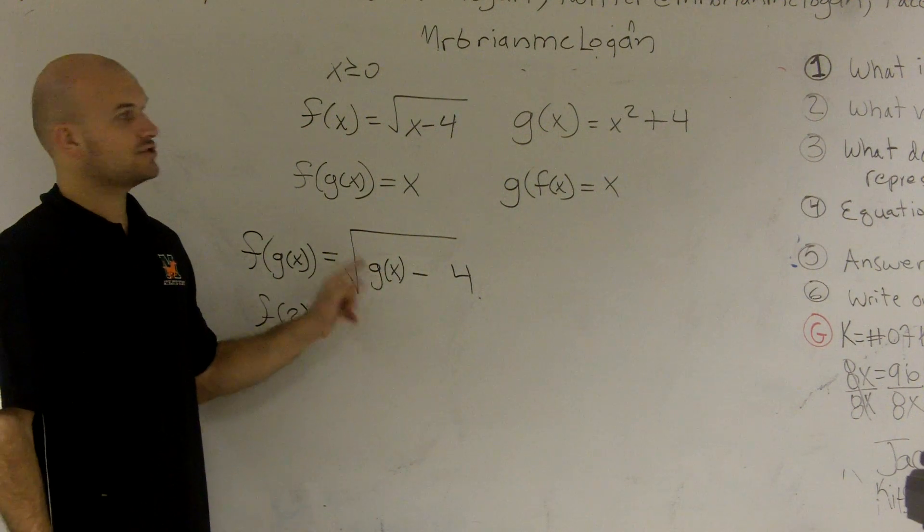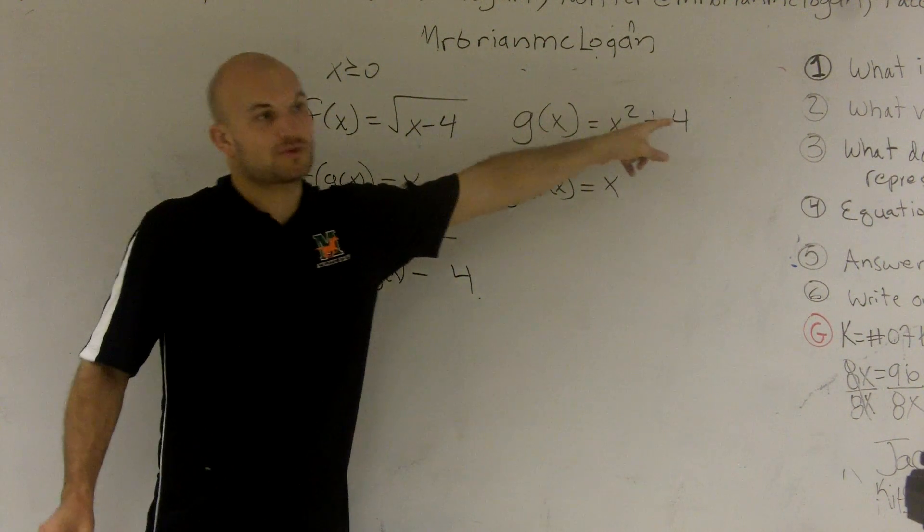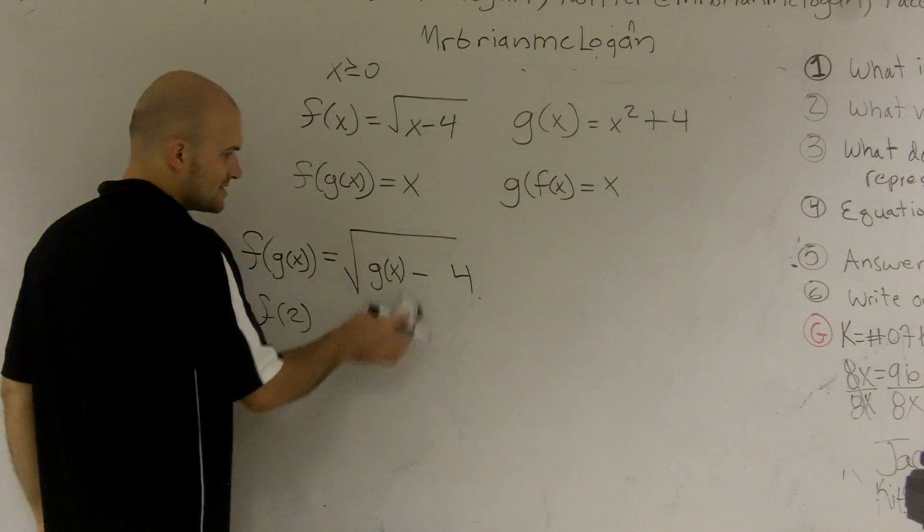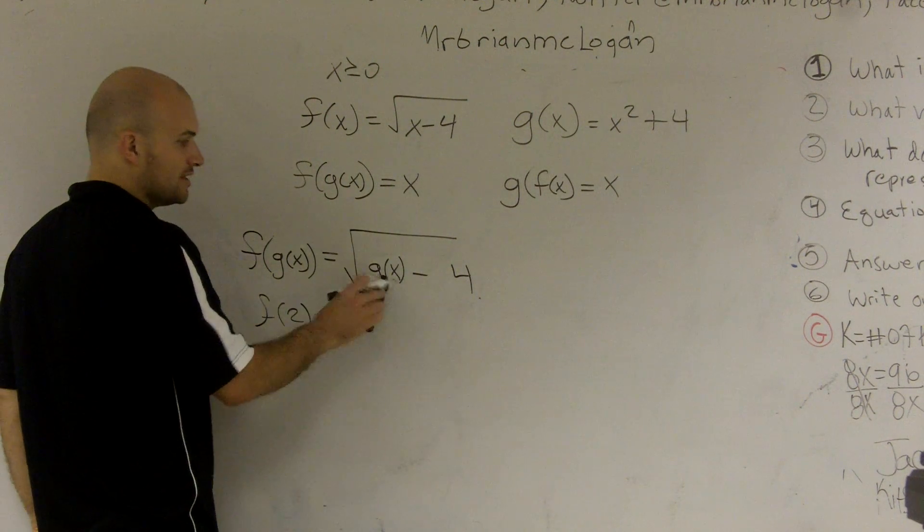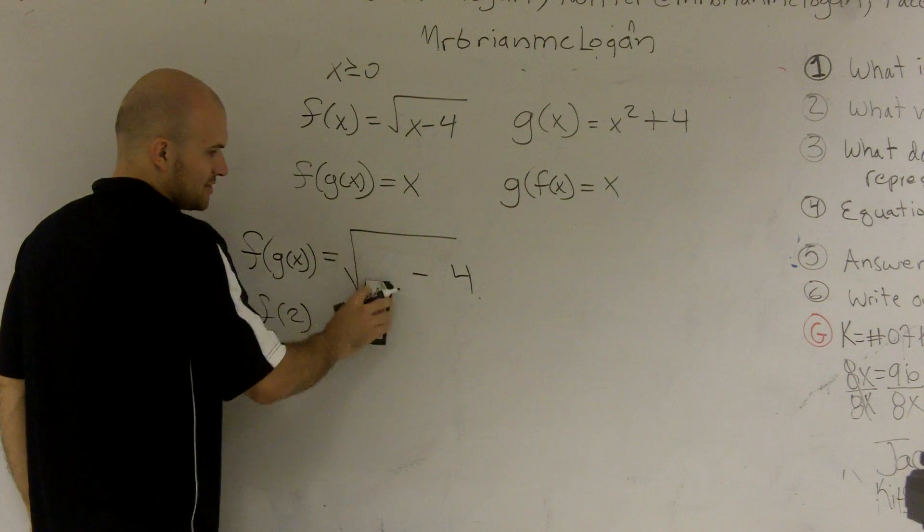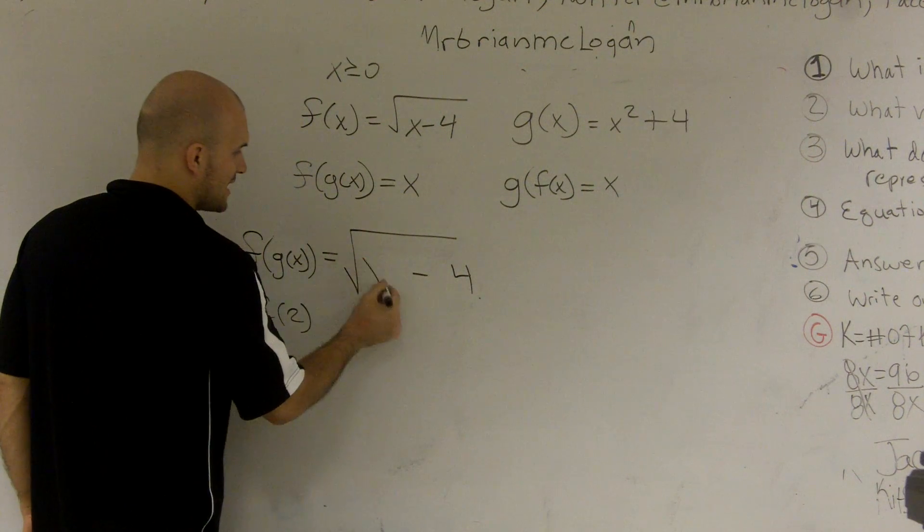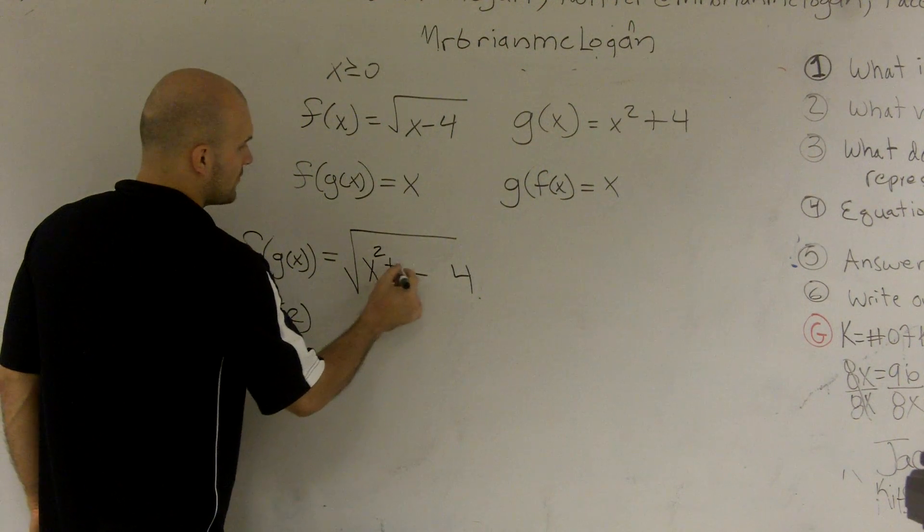Well, what does g of x equal? g of x equals x squared plus 4. So you understand that I'm putting the g of x in there, but I'm not going to write g of x. I'm going to write in x squared plus 4.